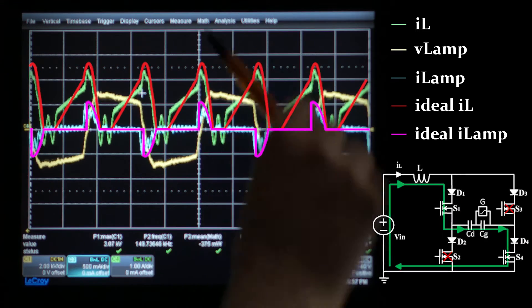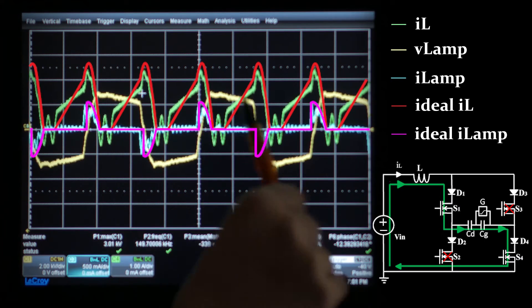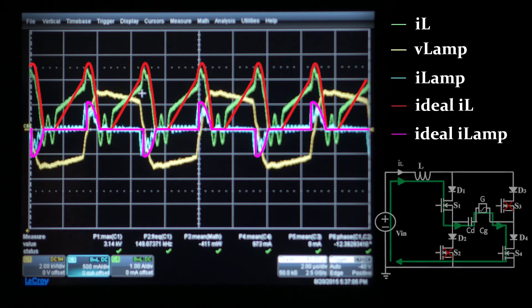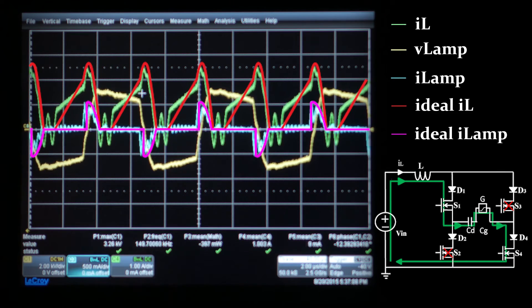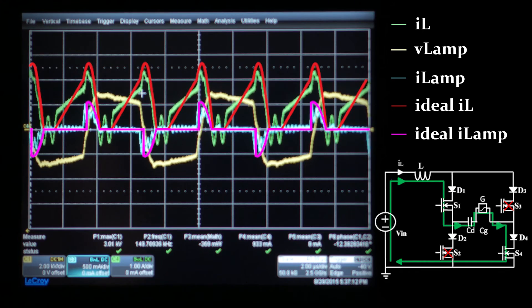Then, there is the discharge sub-interval. In this stage, a resonant behavior between the inductance and the equivalent capacitance of the lamp is established. Once the voltage of the gas reaches the threshold voltage, the resonance changes, since the equivalent capacitance of the lamp varies.